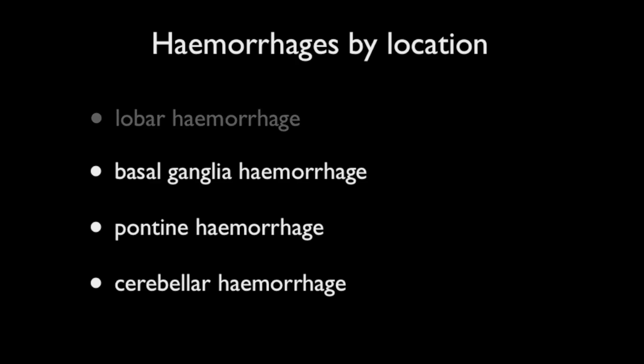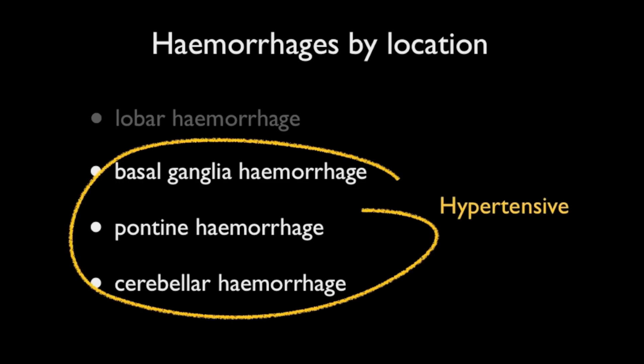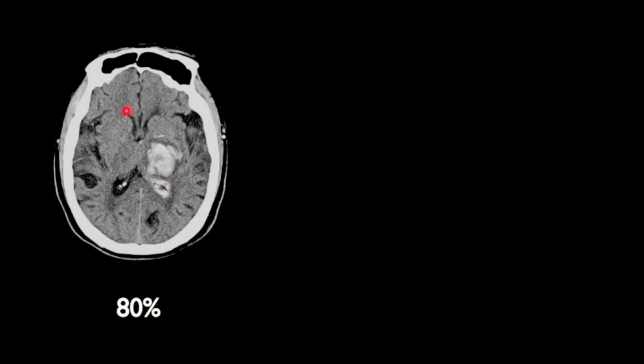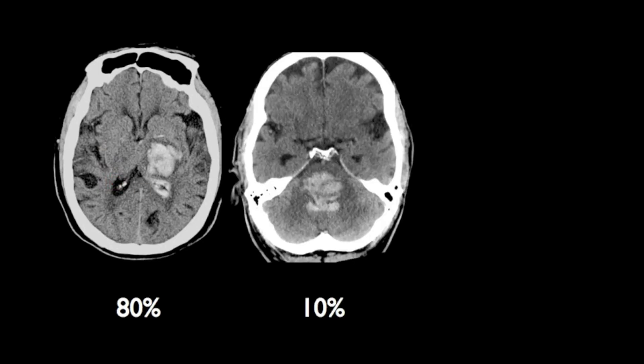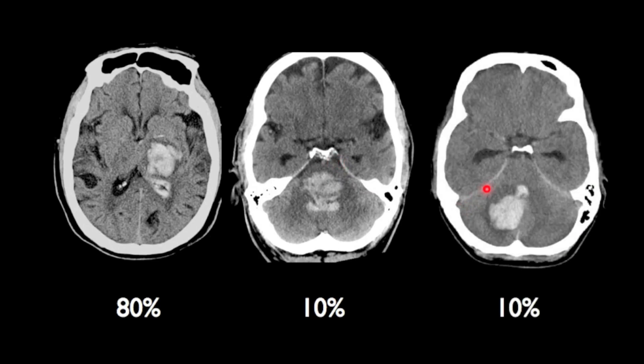And cerebellar hemisphere hemorrhages. It is the latter three that we will be discussing today, as all three are associated with chronic poorly controlled hypertension. Approximately 80 percent of hypertensive hemorrhages arise from the basal ganglia and thalamus, with a further 10 percent from the pons and the remaining 10 percent from the cerebellar hemispheres.